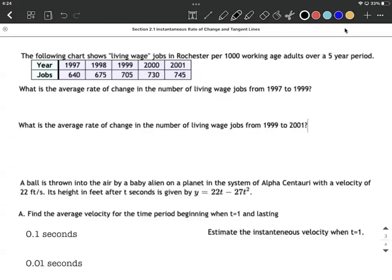On this one we're reading the chart. This chart represents the number of living wage jobs in Rochester per 1,000 working age adults over this five-year period. We want to figure out what is the average rate of change in the number of living wage jobs from 1997 to 1999.